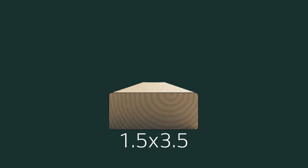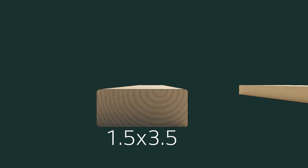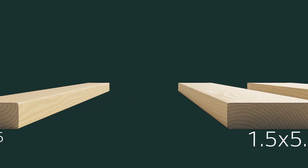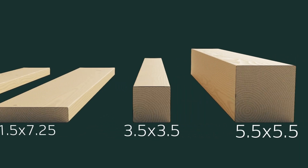A modern two-by-four is one and a half inches by three and a half inches. But why? Why is all dimensional lumber not the size it says it is?